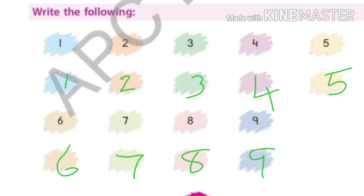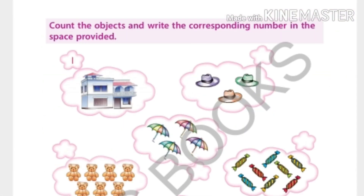It's given here. You are doing like this. Now count the objects and write the corresponding number in the space provided. How many houses? One. Yes, it's given here. Now count the caps: one, two, three. Now count the umbrellas: one, two, three, four.